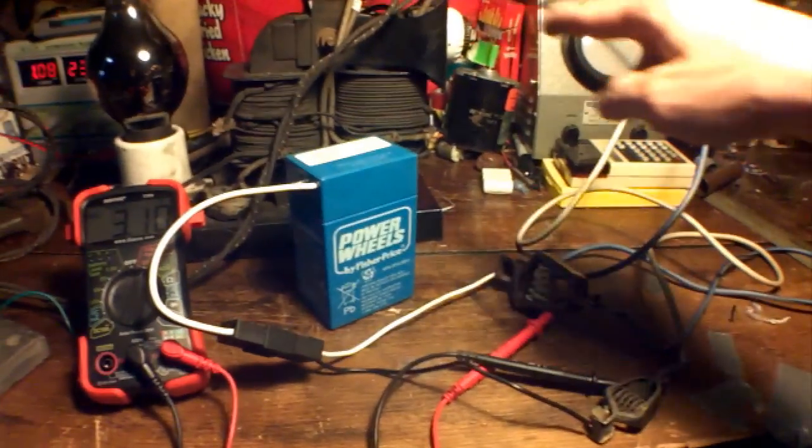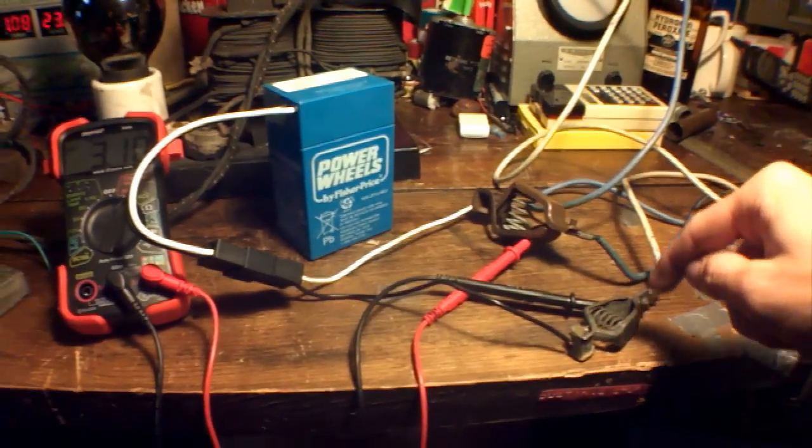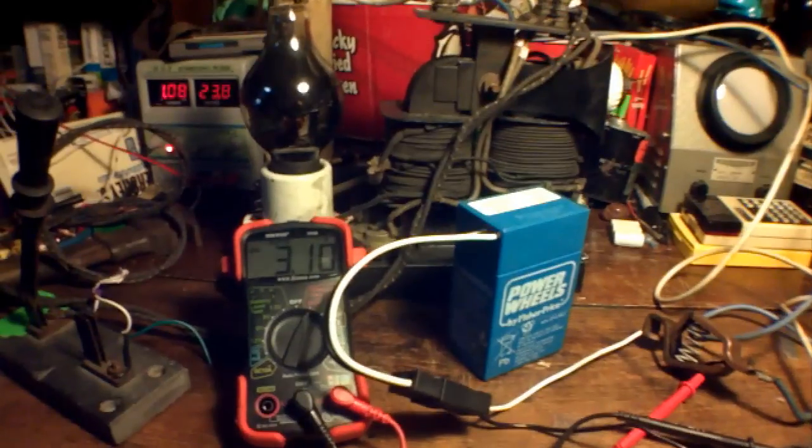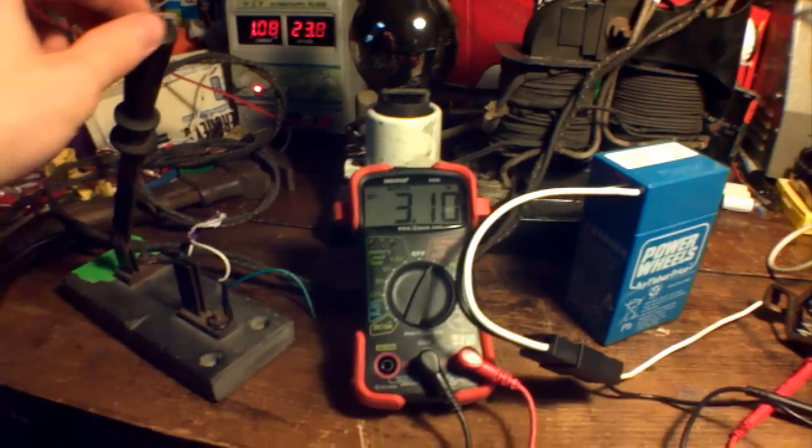Now everything's all hooked up. I have the battery charger from 1918 or whatever hooked into the battery. And I have the voltmeter hooked into the battery, so we can see the voltage being pushed up. So let's go.